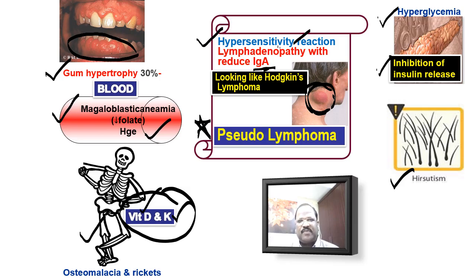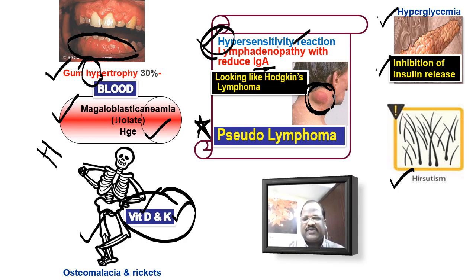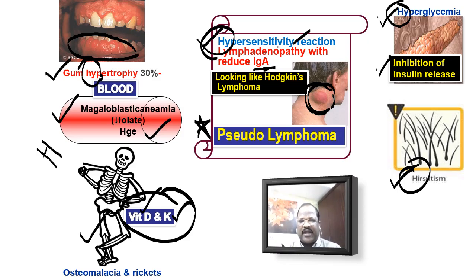All these problems are from chronic therapy. When you look at the problems on chronic therapy, notice that gum hypertrophy starts with H, hematological complications start with H, hypersensitivity reactions start with H, hirsutism starts with H, and hyperglycemia starts with H. So you can frame a mnemonic: all chronic adverse effects of phenytoin start with the letter H — gum hypertrophy (H), hirsutism, hyperglycemia, and so on.